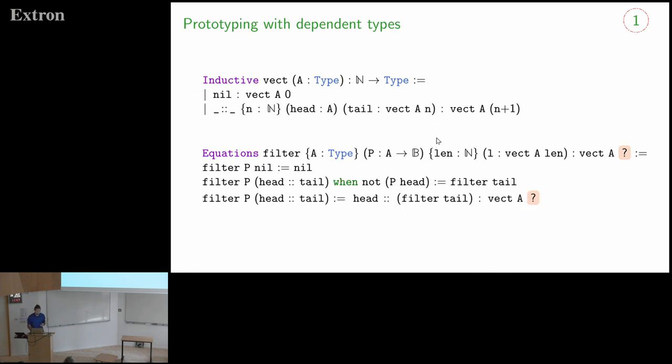So let's define this filter function. Well, we'll go by cases. On the nil case, we'll just return nil. And when we have a successor case, when the list is of a size of a successor, it has a head and a tail. We'll check whether the head satisfies the predicate or not and proceed depending on the two cases.